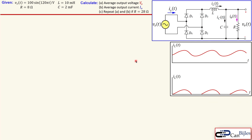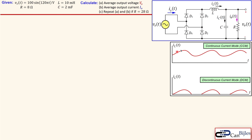Let's look at the waveform for the inductor current for continuous and discontinuous current mode. In continuous current mode (CCM), the current in the inductor is always above zero. In discontinuous current mode (DCM), as the name implies, the current has some value and then drops to zero, then rises again and drops to zero again. For DCM operation we will need a different analysis.